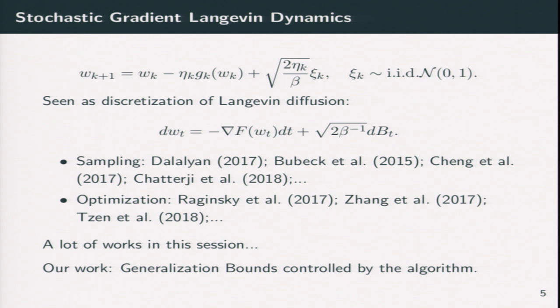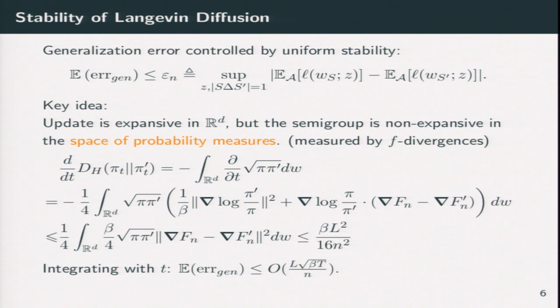which is the gap between training error and test error. So the first tool we are using, the first theoretical viewpoint is stability analysis. Stability theorem tells us that the expected generalization error is controlled by the uniform stability. And you can take the expectation, which is with respect to your randomized algorithm. And the key observation,